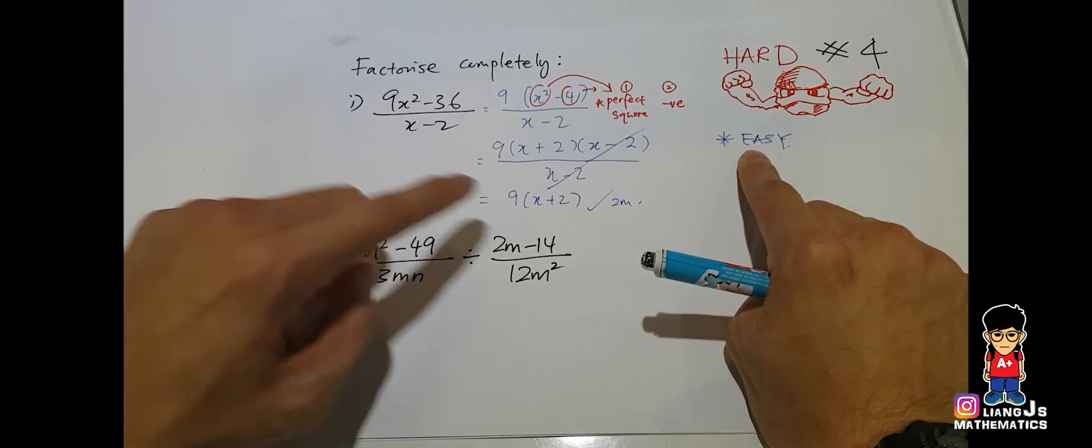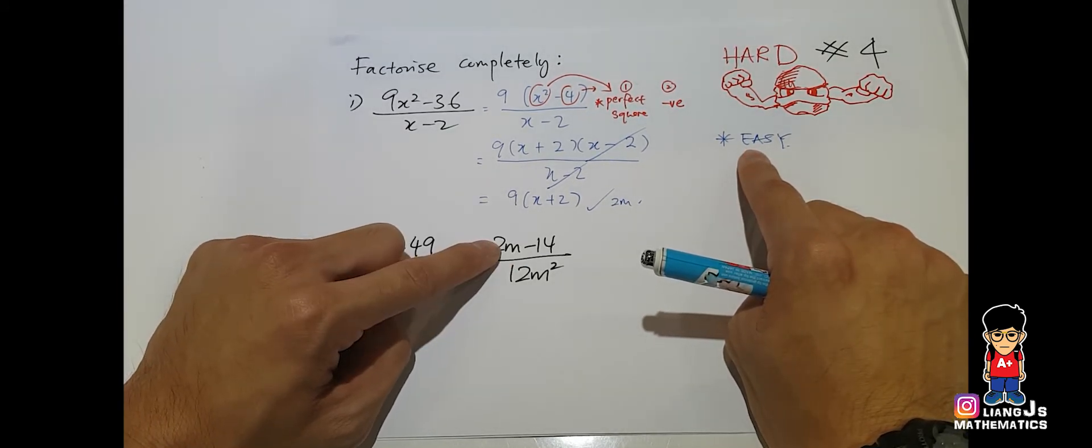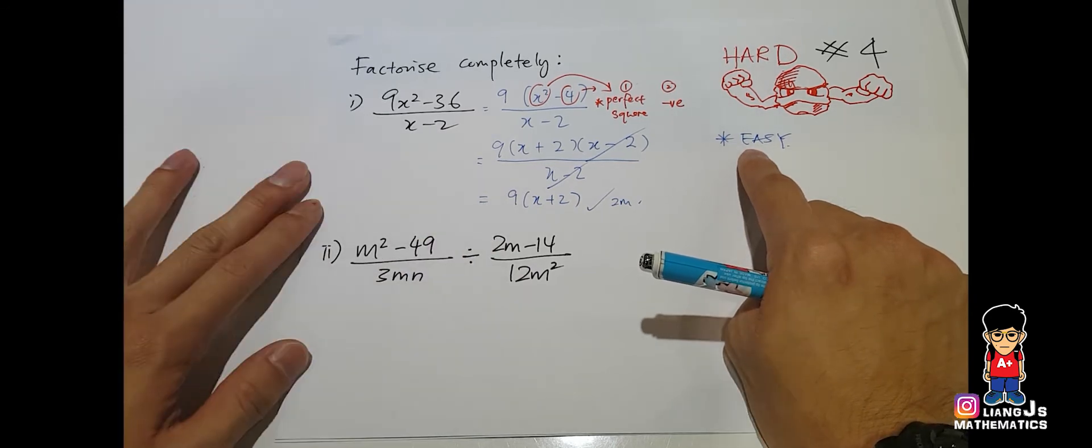Nope, nothing repeats. Yes, over here, you can pull out a 2 and you left n minus 7. And there's a few things I'm going to show you.